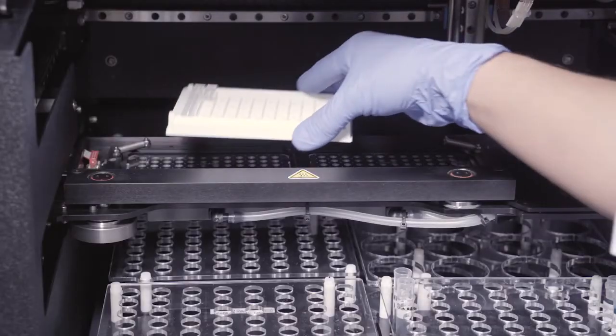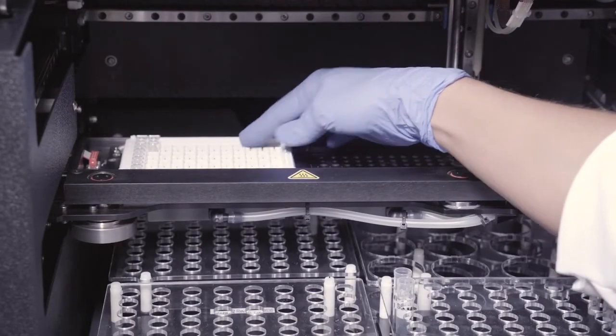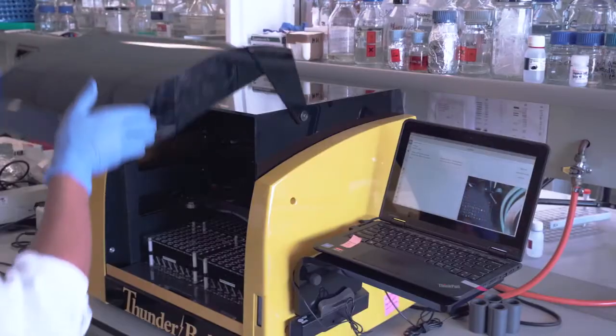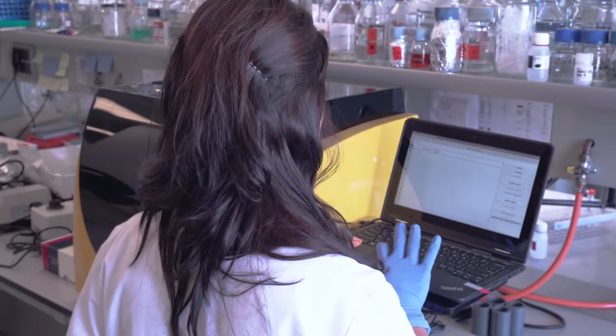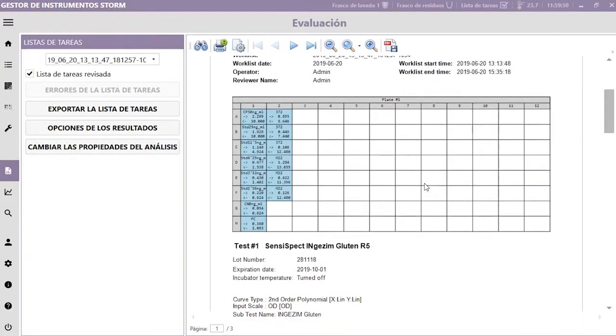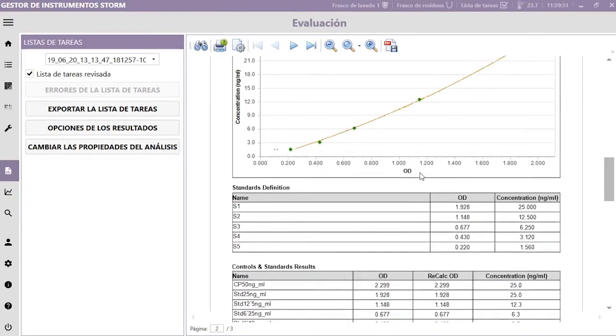Place the plate with the necessary wells and check that everything is correct. Press start button and let the machine perform the assay. When finished, you can see the results in a very friendly report with the calculations already made.